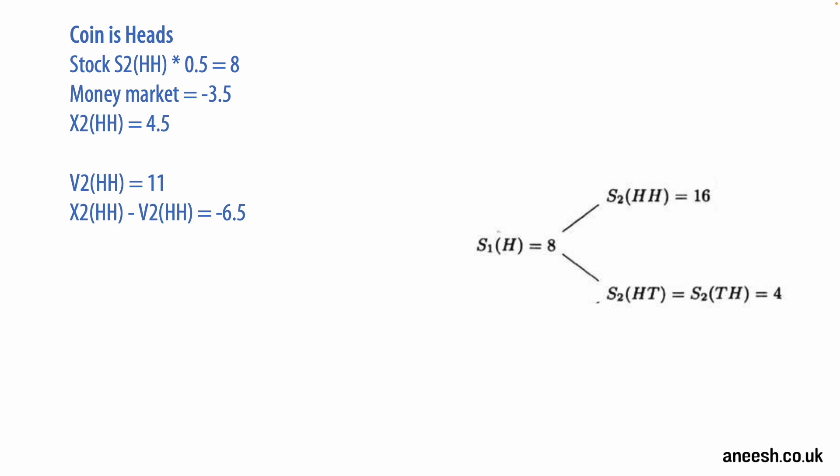We can see here that the risk-neutral price and delta do not cover the exposure of the option with this model. Equally, if the second coin flip is tails, the option expires worthless with a strike of 5. However, the agent still owes the money market 3.5 and the 0.5 delta held on that stock is worth just 2. So that means the portfolio value is negative 1.5. So this small example illustrates the need for the agent to dynamically adjust the hedge on the option as the binomial model changes.